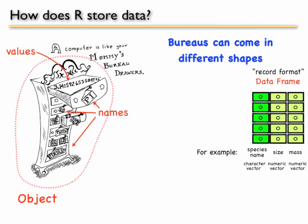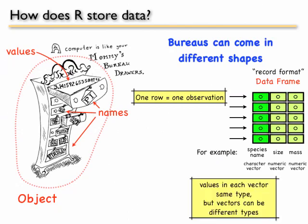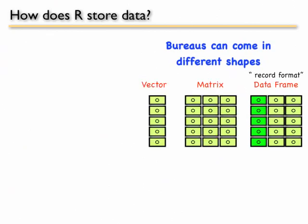This is called record format. And it's designed so that you can have one row for one observation. Each row would be like the value for a different species. Values in each vector have the same type, but the vectors can be different types.